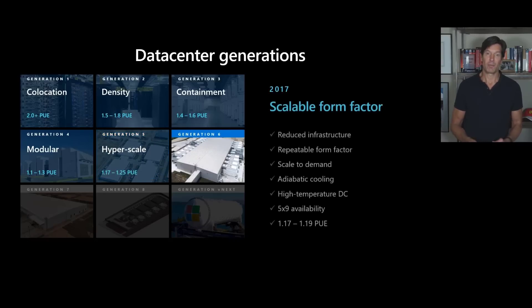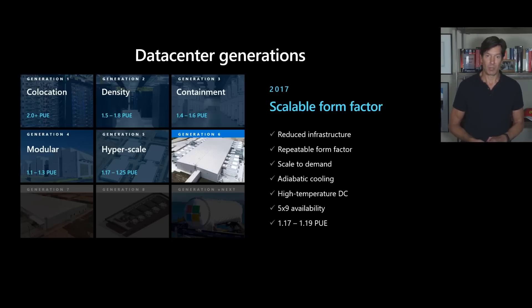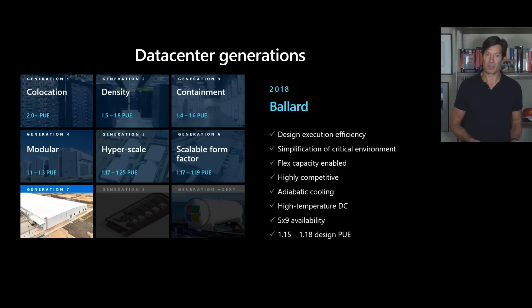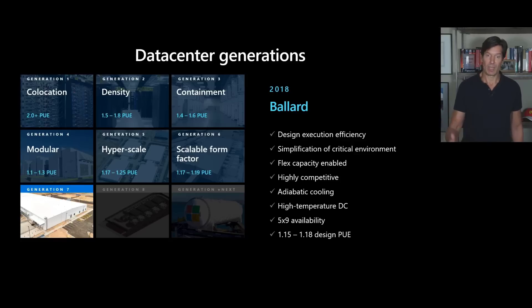In generation six, our scalable form factor generation, instead of creating large 32-megawatt tranches of data center, we moved to creating smaller colo-sized units that we could connect together into high-scale configurations. This saved costs and made deployment more agile, achieving PUEs of 1.17 to 1.19. With generation seven — launched last year — we introduced the Ballard design, simplifying the electrical systems and adding support for flex capacity. Using intelligent software to monitor power usage, we can throttle three-nines workloads to ensure we never trip power even when high-energy workloads spin up, achieving PUEs of 1.15 to 1.18.